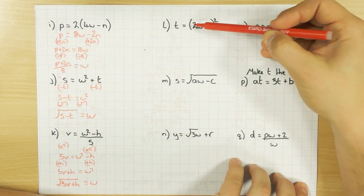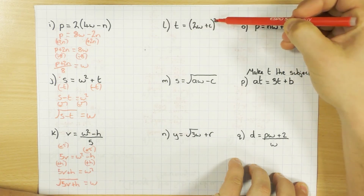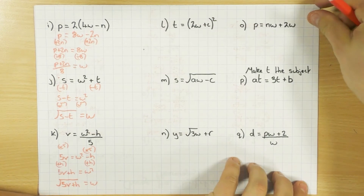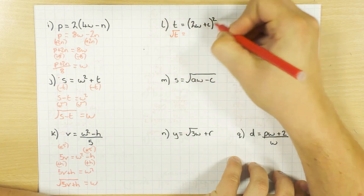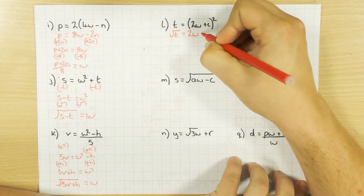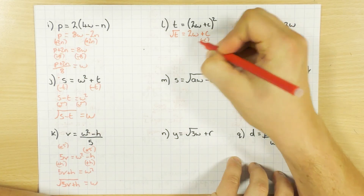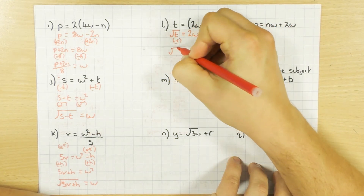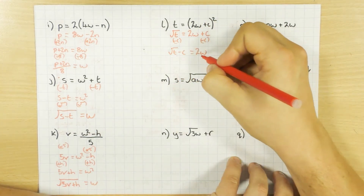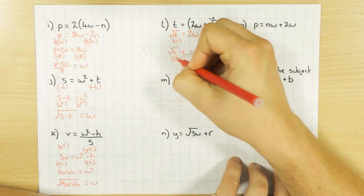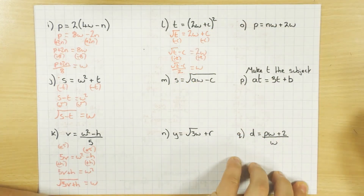This time the 2W plus C, everything there is being squared. I've got to deal with that first — the opposite of squaring is square rooting. So I square root both sides, which leaves me with the square root of T, and then that square disappears leaving 2W plus C. Then I treat it exactly the same: minus C from both sides gives square root of T minus C equals 2W. Then divide both sides by 2, so I'm left with the square root of T minus C, everything divided by 2, equals W.